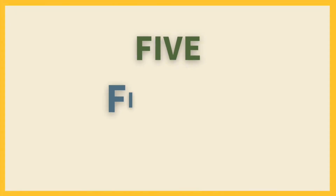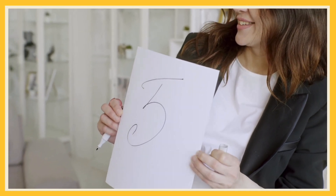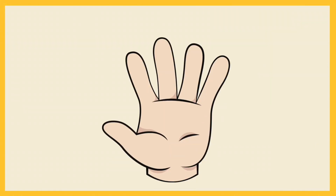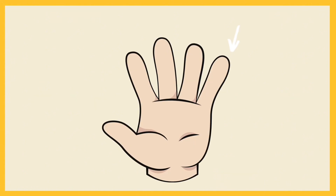Hey there, fellow storytellers! Today we are diving into an amazing storytelling experience known as the Five Finger Pitch. It's a fantastic way to get the core of your story down on paper in a concise and effective manner. Are you ready to give it a try? Let's jump right in. Imagine a life-sized outline of your hand right in front of you. We are going to write key story points on each finger. There's no room for lengthy explanations, so this exercise will help you be super concise.